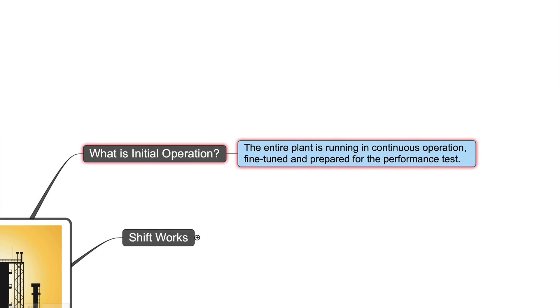What does it mean, initial operation? It means the entire plant is running in continuous operation, fine-tuned and prepared for the performance test. Our EPI doesn't say anything here as well.